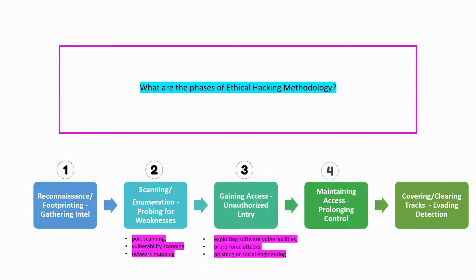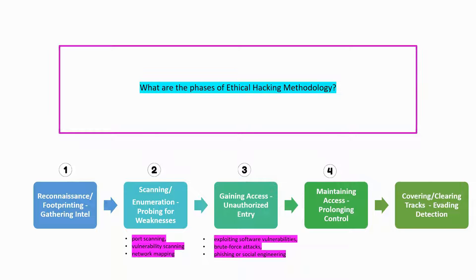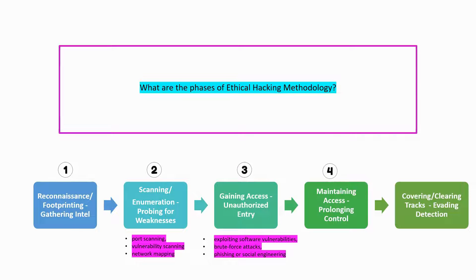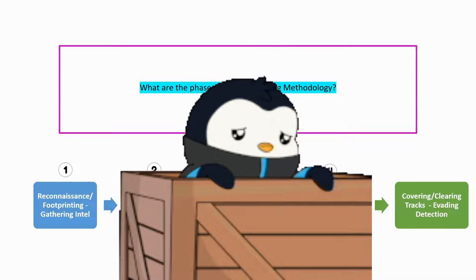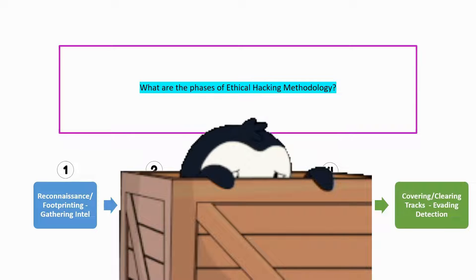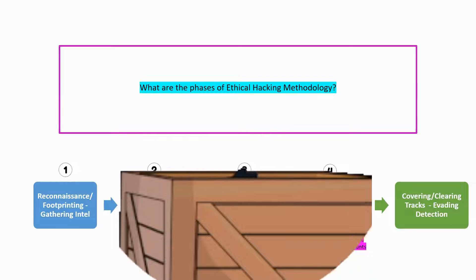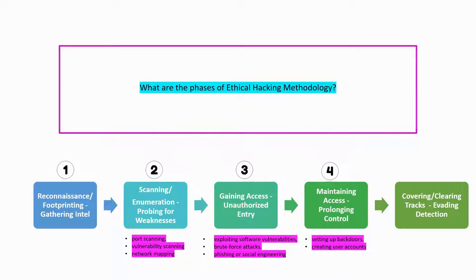The 4th step is about maintaining access. After gaining access to the target system or network, the ethical hacker attempts to maintain that access for as long as possible. This involves setting up backdoors, creating user accounts, and hiding their activities. The goal of this phase is to be able to access the target system or network at a later time.